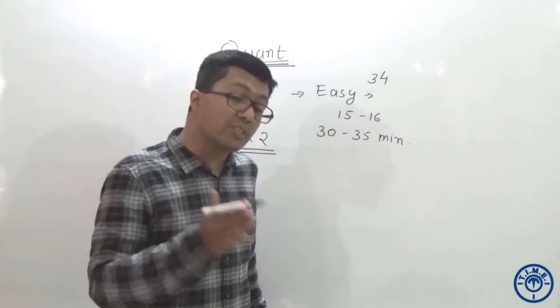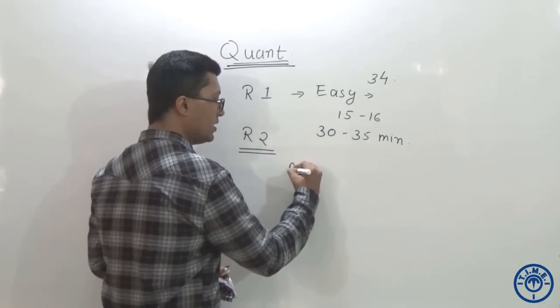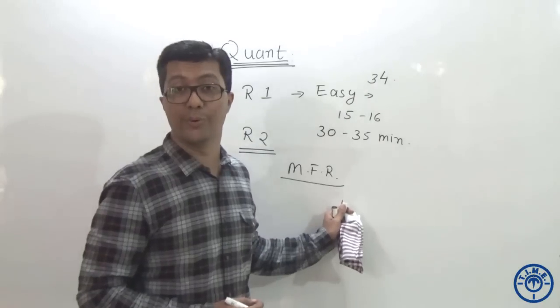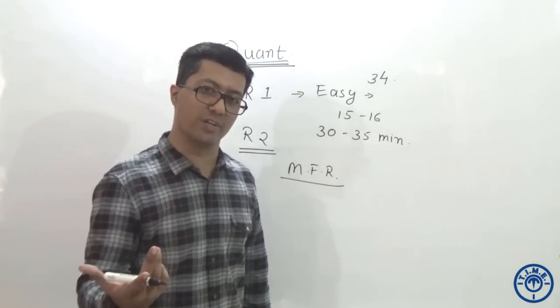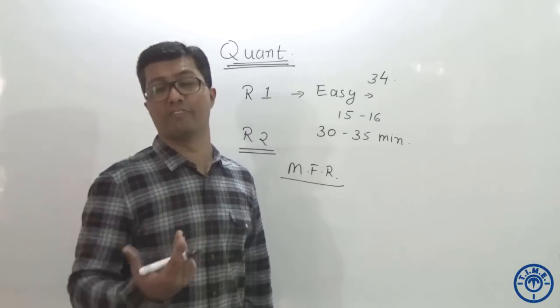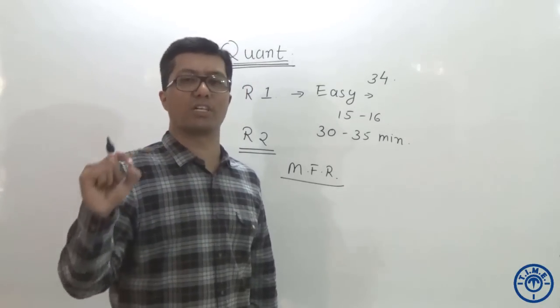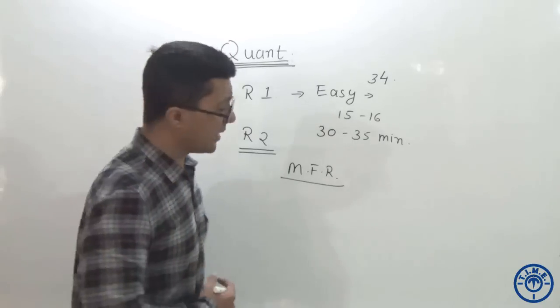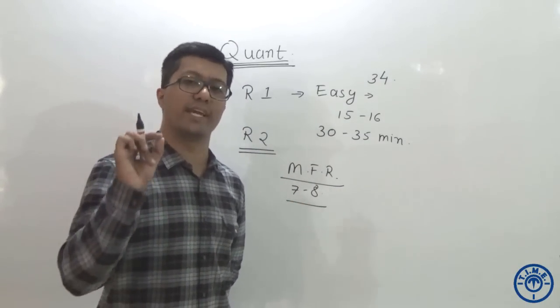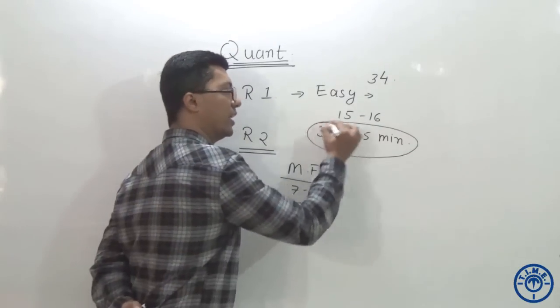But if I see that I had solved this question prior to this particular examination and it is going to take some time, then I mark for review. You are giving an online examination. Why not use the information technological tool given to us by the CAT examination in our benefit. We can easily click mark for review for a question so that later on, if you are having time, we can come back to this question. Ideally, there will be seven to eight questions in the entire paper that you will feel can be solved but will take some time, which you can mark for review, come back later on and solve it once you are already done with round number one.